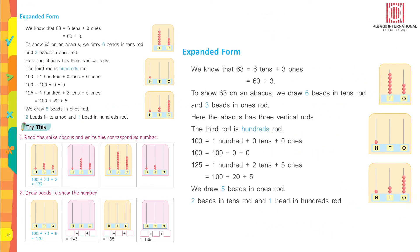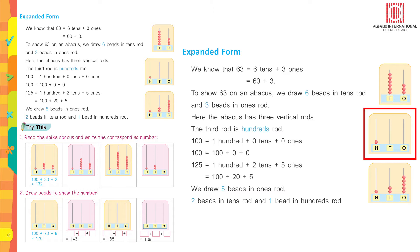Expanded form. We know that 63 equals 6 tens plus 3 ones, which equals 60 plus 3. To show 63 on an abacus, we draw six beads in the tens rod and three beads in the ones rod. The abacus has three vertical rods; the third rod is the hundreds rod.